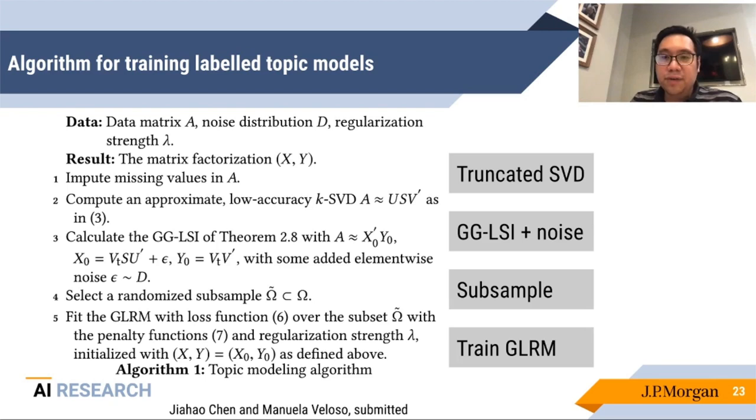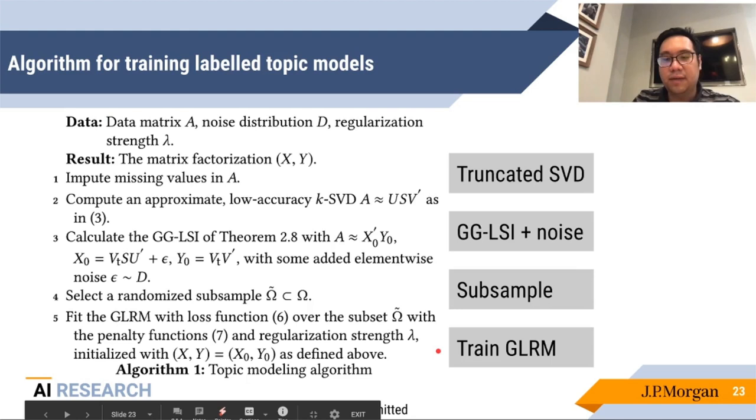Here's the algorithm that we compose based on the pieces we've seen so far. So we construct the truncated SVD. We use that to construct the LSI factorization with generalized gauge, and we also do a numerical trick, which is randomized subsampling. And then finally, we feed this to the low-rank topic models for training. Before we go into the details, let's just look at the results.